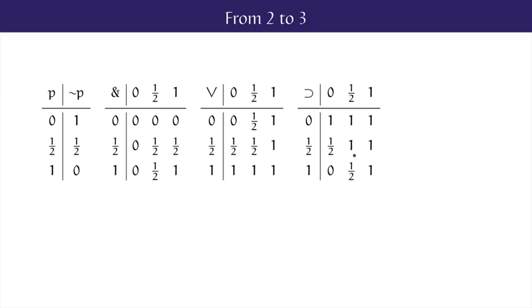And Lukasiewicz's choice for this value is one. Take a borderline case of red. It seems like the statement, if this is red, it's red, should be true, even if the idea that it's red is intermediate between truth and falsity. So these are the tables for Lukasiewicz's three-valued logic. The practice exercises for this section will have you looking at the way that these three-valued tables work.